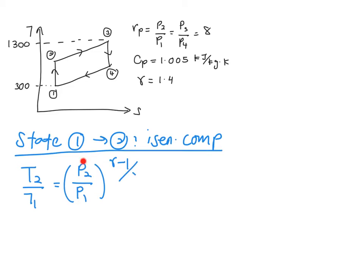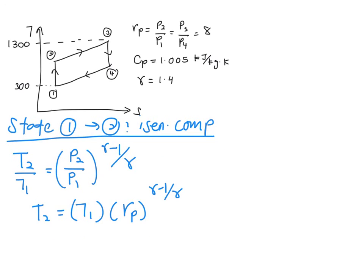You rearrange this mathematical form into this one and substitute your P2 over P1, which is equivalent to Rp. You plug in all the values. And finally, you are going to have T2 equal to 543.43 Kelvin.